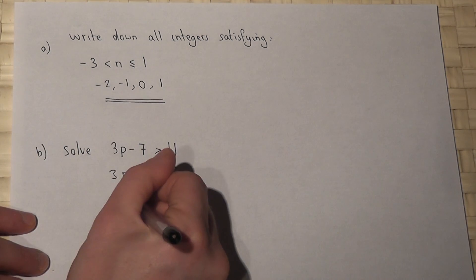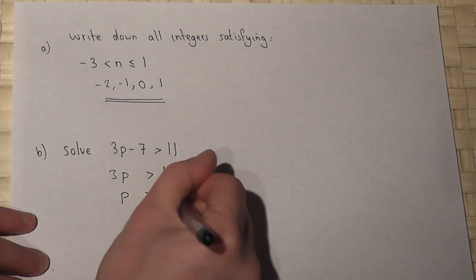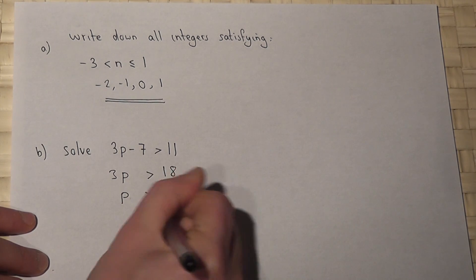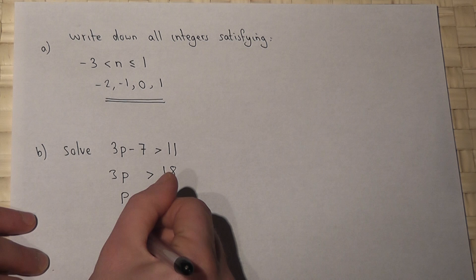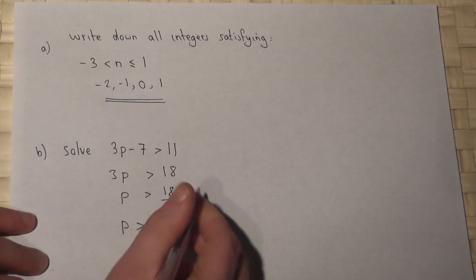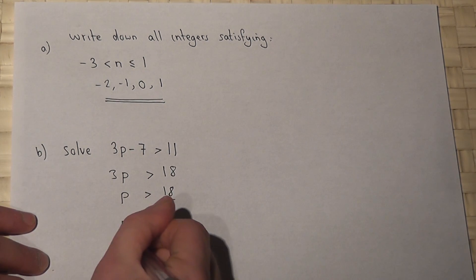We then, as with equations, just divide by the 3. Again, we maintain the inequality. So p is greater than 18 divided by 3, which is 6.